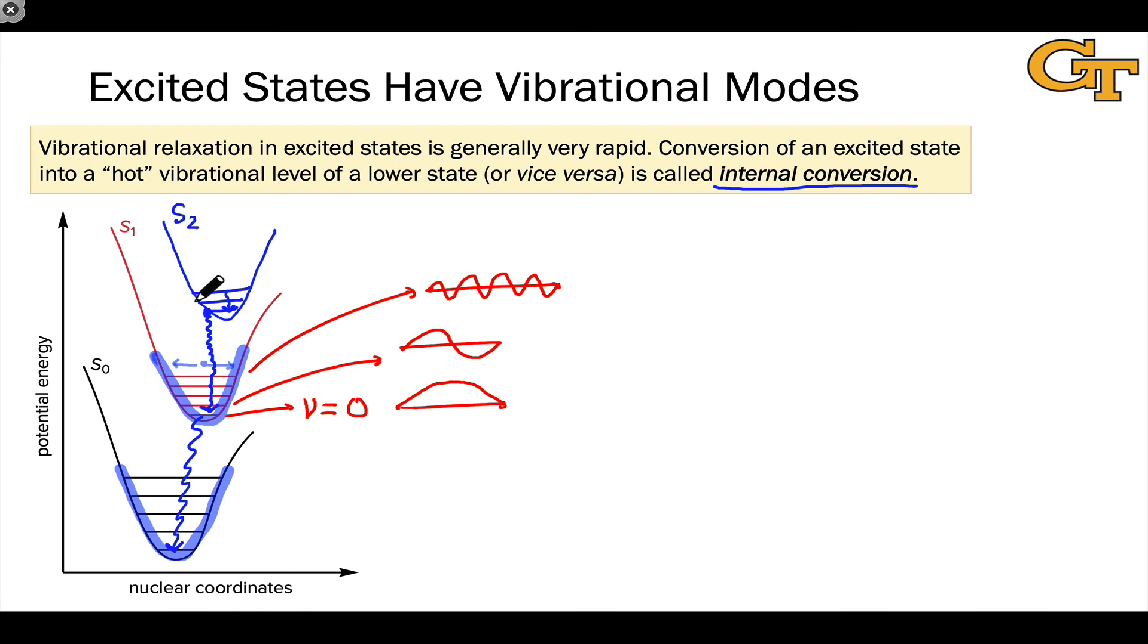Briefly here, I'll mention an important rule of thumb for upper excited states. We can represent those in general as Sn, where n is greater than 1. Sn to S1 internal conversion is very fast. Very fast. In particular, relative to almost any other process that Sn can do, Sn to S1 internal conversion is very fast.